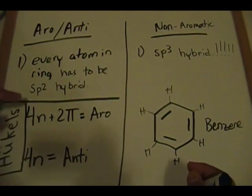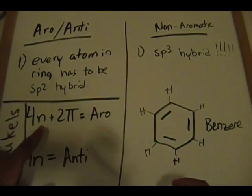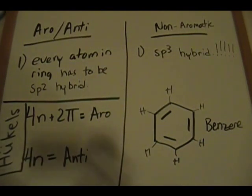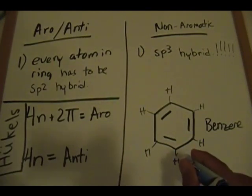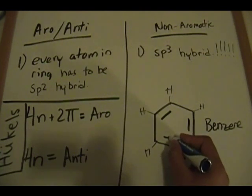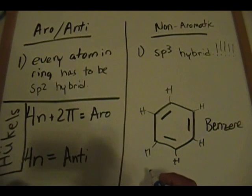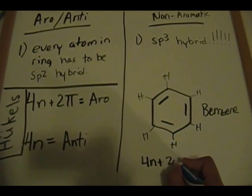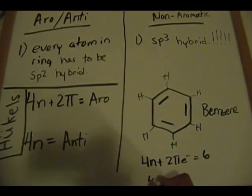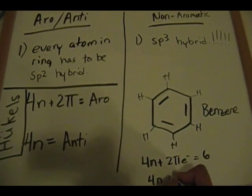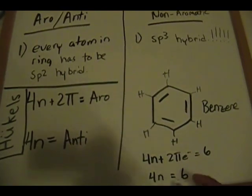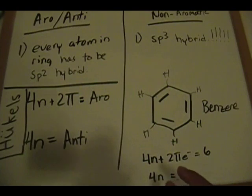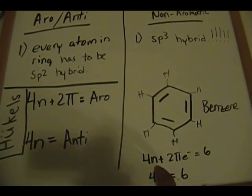To determine aromatic vs. anti-aromatic, you count the pi electrons — the electrons in the p orbital from the double bonds. Benzene has three double bonds: 2, 4, 6 pi electrons. We set that value equal to each formula. So 4n + 2 pi electrons = 6. Basic algebra: solve for n and see if you can find a whole number value — not a decimal like 1.5, but a whole number like 1, 2, 3, 4, 5.